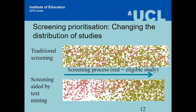What we'd like to do using text mining and machine learning is change the distribution of studies — change the order in which we screen citations. In traditional screening, each dot represents a study and the red ones indicate eligible studies, distributed randomly and fairly evenly throughout the process. Using machine learning, we use a technique that pulls relevant citations towards the beginning of the screening process and repels the irrelevant ones towards the end.